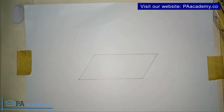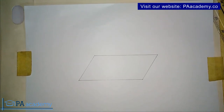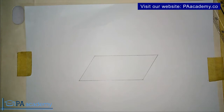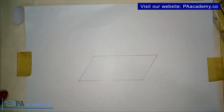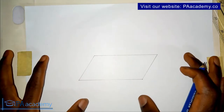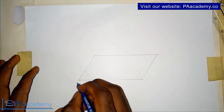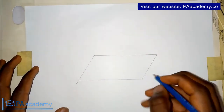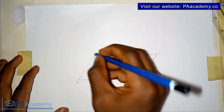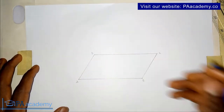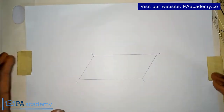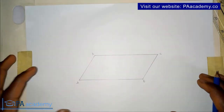Hello and welcome to PA Academy. In this video I'm going to be showing you how to draw a square whose area is equal to a given parallelogram. We have a parallelogram already — let me call the points A, B, C, and D.